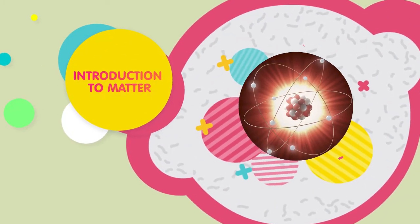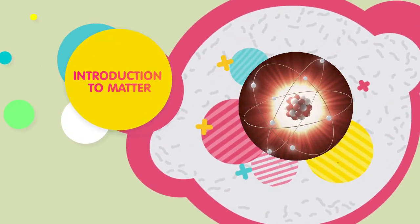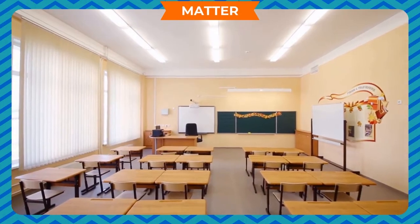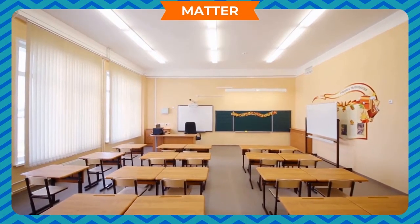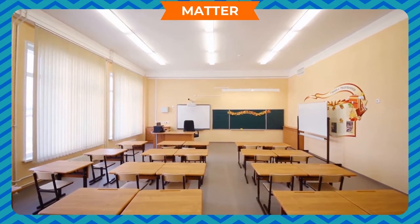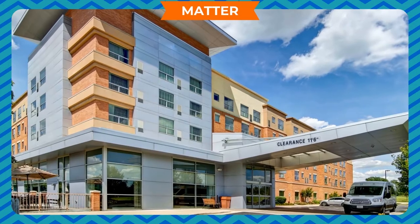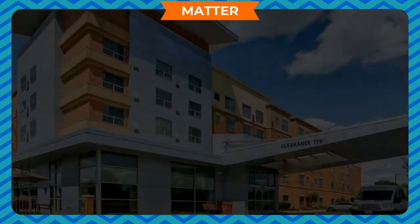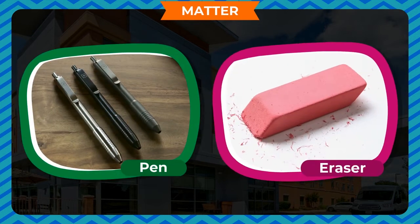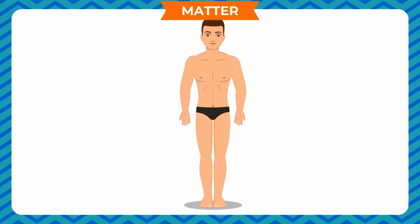Introduction to matter: every object that has mass and occupies space is called matter. All objects are made of matter, such as books, tables, pens, erasers, etc. The human body is also made up of matter.